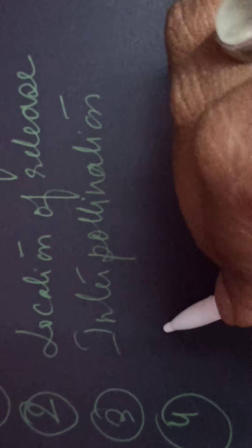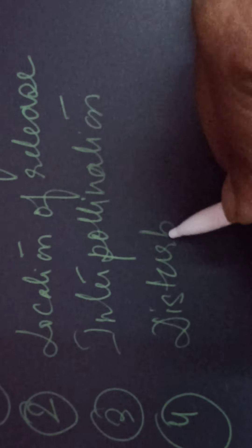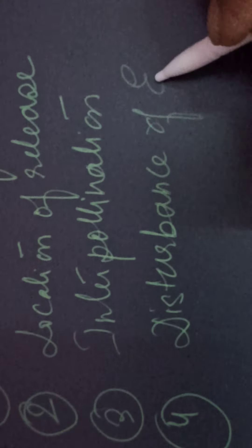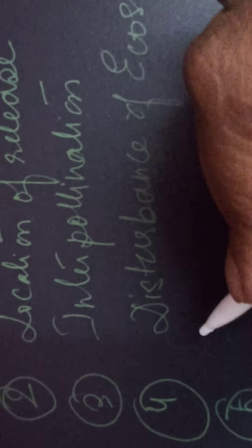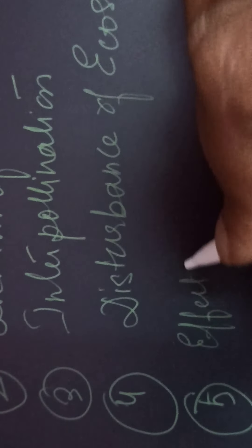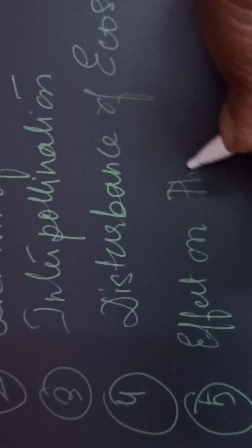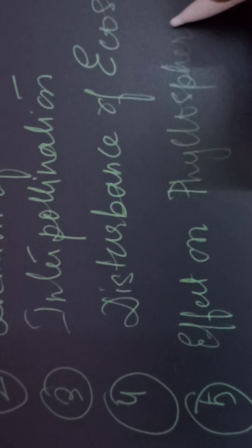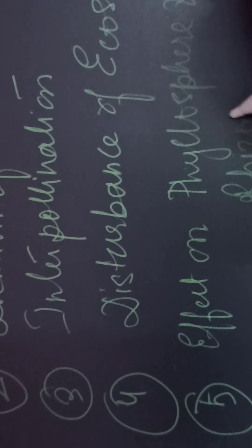The fourth point is the possible disturbance of the ecosystem, since it is an exotic species, there will be a disturbance in the ecosystem. The fifth and final point is the effect of the transgenic plant on the flora and fauna of the phylosphere and rhizosphere.